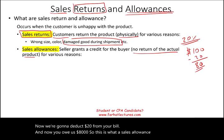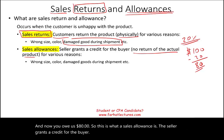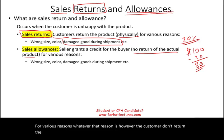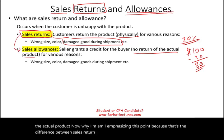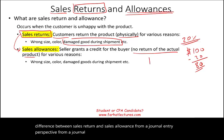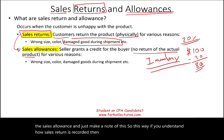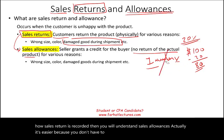The seller grants a credit to the buyer for various reasons, whatever that reason is. However, the customer does not return the actual product. Why am I emphasizing this point? Because that's the difference between sales return and sales allowance from a journal entry perspective. From a journal entry perspective, there's no inventory involved for the sales allowance. If you understand how sales return is recorded, then you will understand sales allowances — it's actually easier because you don't have to worry about the inventory part.